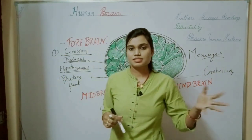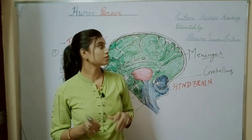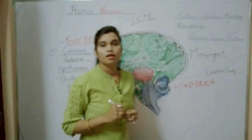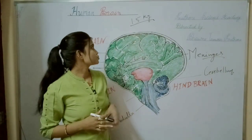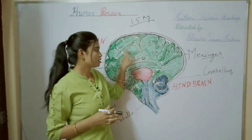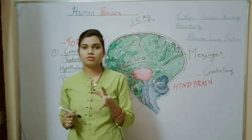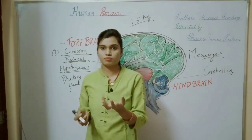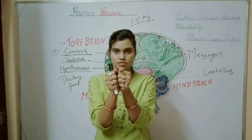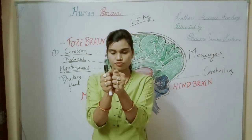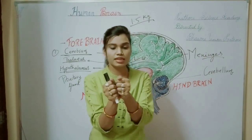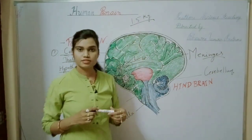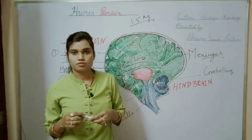Let us discuss the human brain in detail. If we talk about its weight, it is about 1.5 kg — a little part of our total body weight. And if we talk about its shape, it is like a walnut shape. It has two hemispheres, and if we do a transverse section, we can see the structure of our brain.